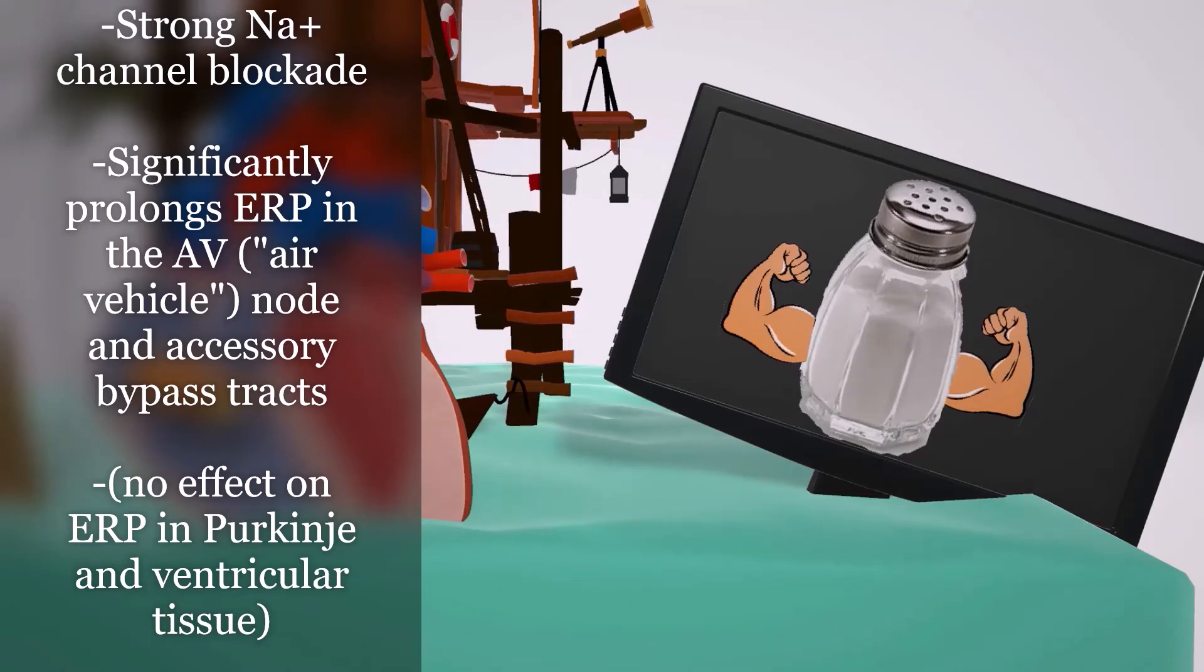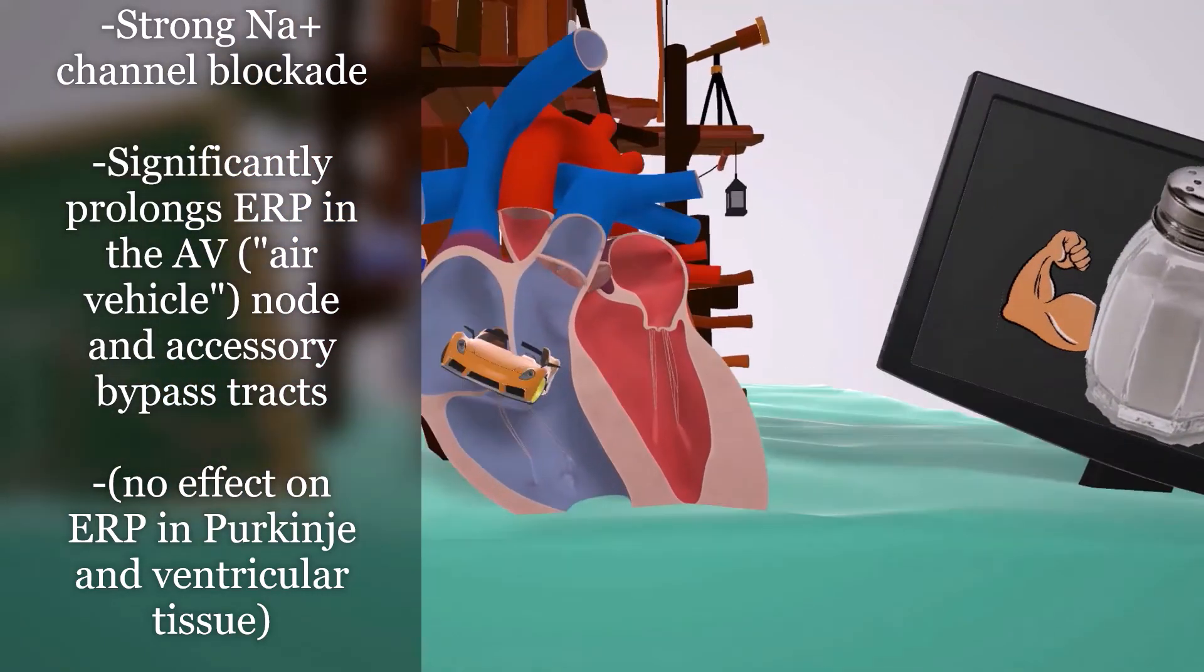Class 1C anti-arrhythmics work as strong sodium channel blockers, and by doing so they significantly prolong the effective refractory period in the AV node and the accessory bypass tracts. And that's why if you take a look at this squishy heart model over here that they have in their classroom, we have the air vehicle over here. Air vehicle in the AV node to remind us of the AV node. AV stands for air vehicle as well as for AV node.